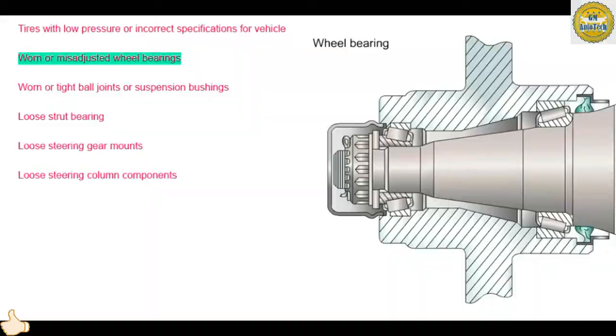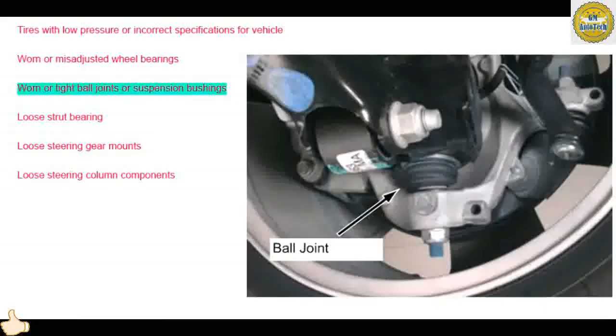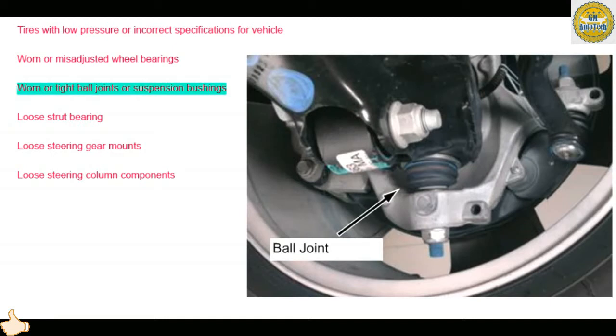Wheel bearings should not exhibit any looseness or play. Worn ball joints or suspension bushings can cause excessive play in the steering system. This excessive play results in steering wander. A tight ball joint can cause poor steering returnability. Constant correction for this condition could be described as wander.